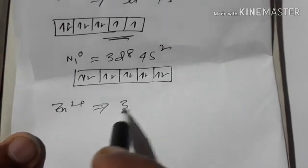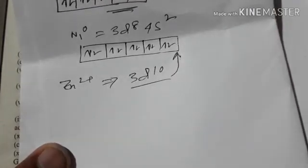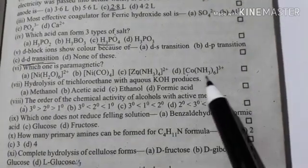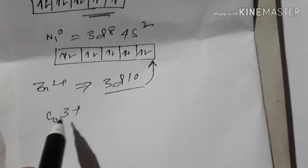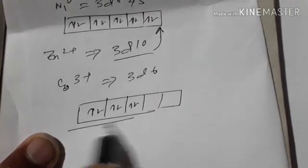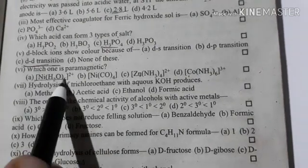Zn2+ has 3d10 configuration — diamagnetic. Cobalt 3+ with strong field ammonia: electron configuration is 3d6 with all electrons paired — diamagnetic. So option A, Ni(H2O)2+, is the paramagnetic complex and option A is right.